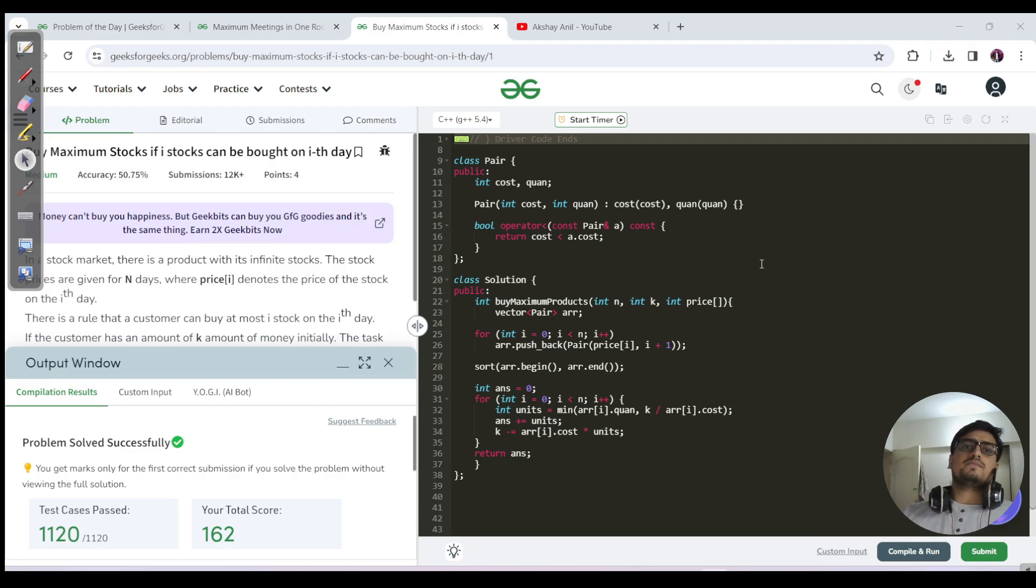You can star and fork my DSA repository mentioned in the description with the link. You'll get all the source code there. Just do Ctrl+F, type the question name, and you'll get it. If you understand the problem and solution, do like, share, and subscribe. Support our community. Until then, keep learning, keep going. Bye bye and take care, guys.